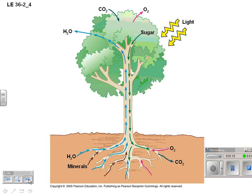Here's a general overview. Water enters the roots, travels up the stem, and out the leaves. Sugar made by the leaves in the process of photosynthesis, which we'll cover later, is transported down the stem, sometimes all the way to the roots.